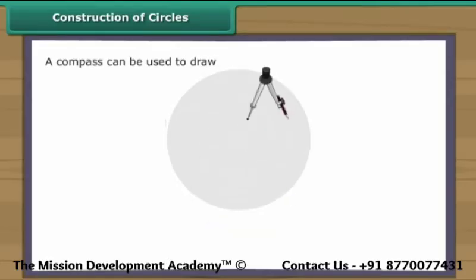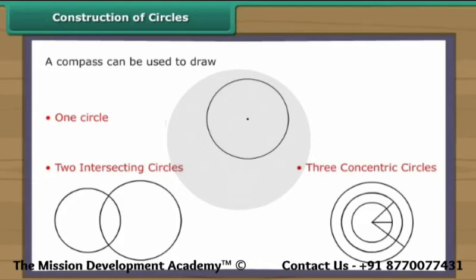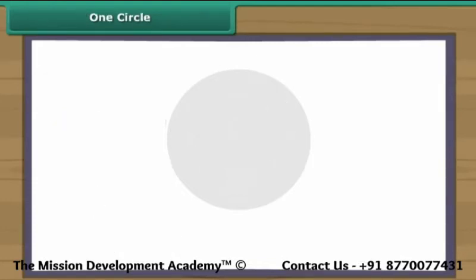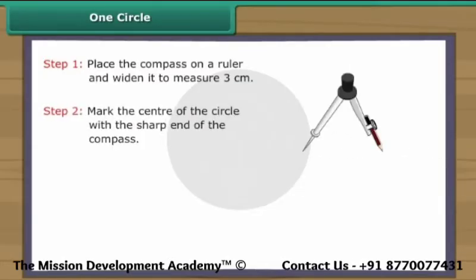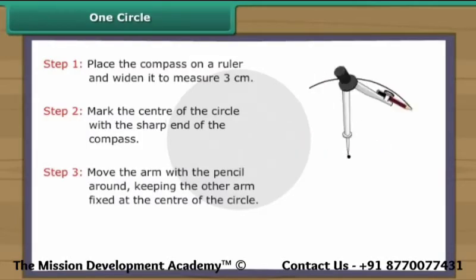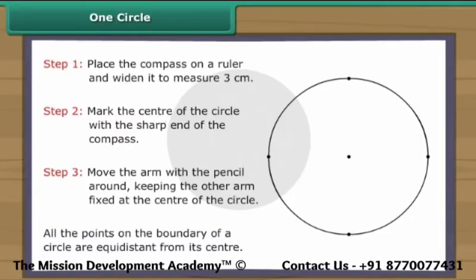Let us use a compass to draw one circle, two intersecting circles, and three concentric circles. Let us draw a circle with three centimeters radius. Place the compass on a ruler and widen it to measure three centimeters. Mark the center of the circle with the sharp end of the compass. Move the arm with the pencil around, keeping the other arm fixed at the center. The circle is formed. All the points on the boundary of a circle are equidistant from its center.